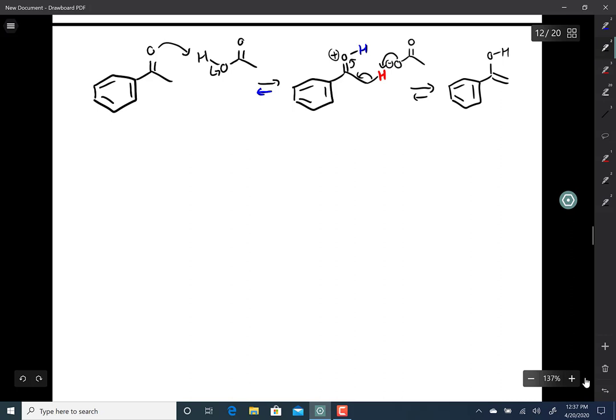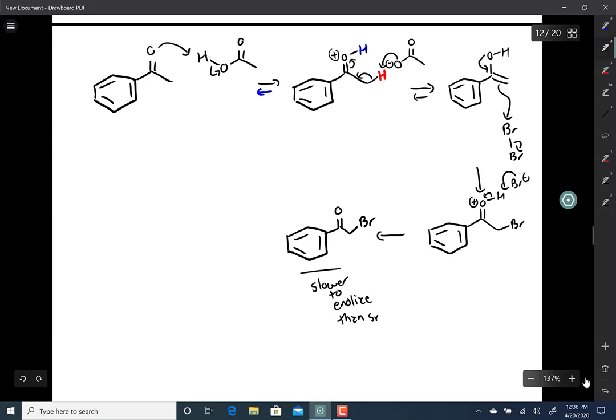So to figure out which hydrogen to take off, you really need to pay attention to which product you're going towards. And then once you have that enol, that enol reacts with bromine. The resulting bromide or acetate comes back, takes that proton off, and you have your product. And this is a little bit slower to enolize than the starting material, and as a result, you can stop here.